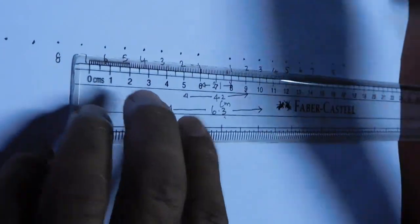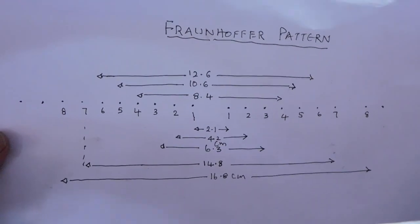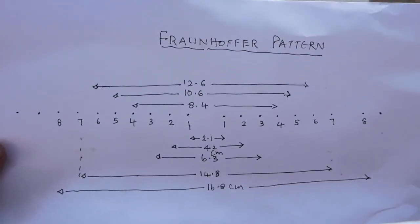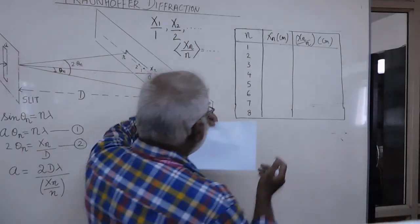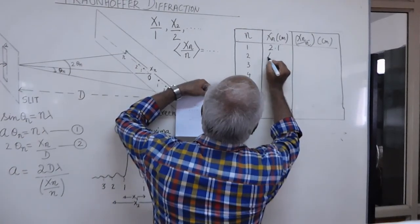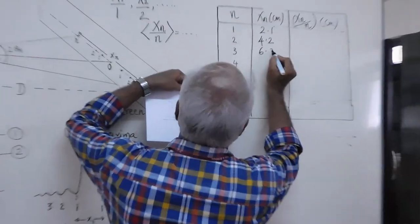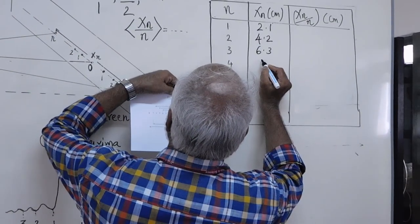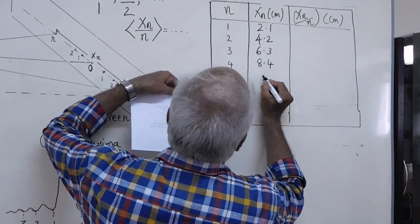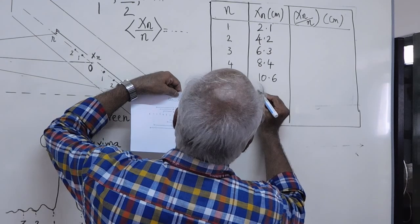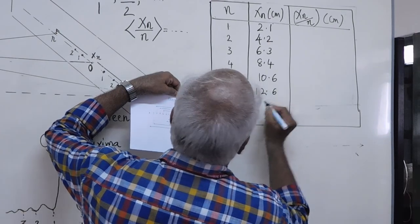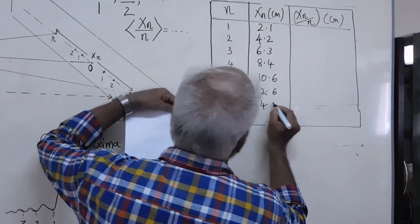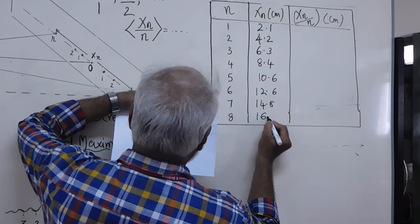We make these measurements for all the minima on either side and tabulate them. For the first order we obtained 2.1 cm; second order, 4.2 cm; third order, 6.3 cm; fourth order, 8.4 cm; fifth order, 10.6 cm; sixth order, 12.6 cm; seventh order, 14.8 cm; and eighth order, 16.8 cm.